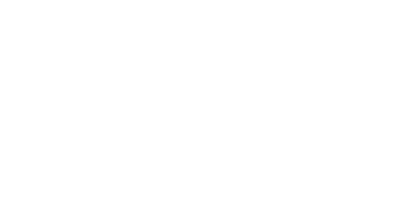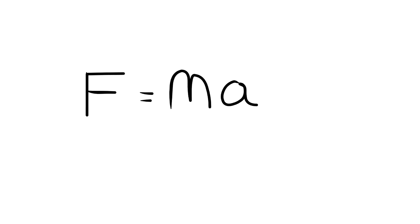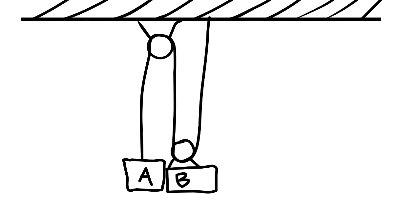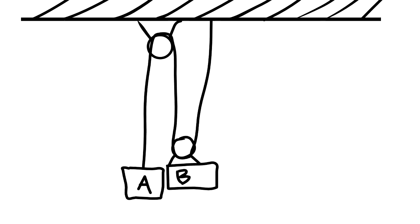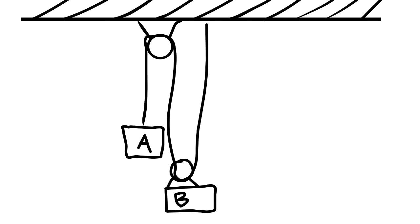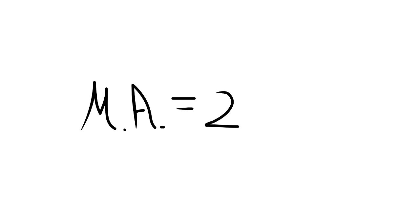Because there is half as much acceleration in block b than block a, looking at Newton's second law, we find that the total force driving the acceleration of b must be half of the total force driving the acceleration of a. Because of that, the force required to lift b in this pulley system, applied at a, is only half of the force that would be required to lift b directly. Therefore, this system has a mechanical advantage of two.